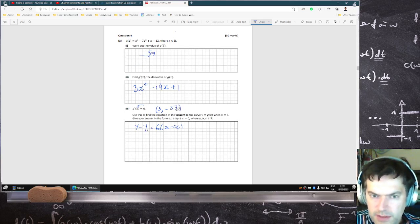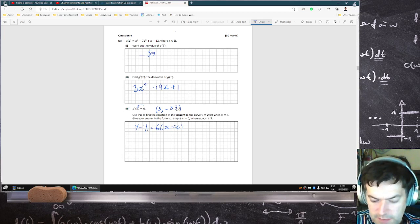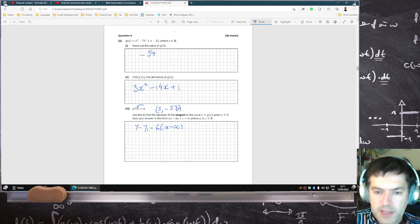and we know the y1 is minus 57. That's quite a negative number. I'm going to double-check that. 5 cubed minus 7 times 5 squared plus 5 minus 12. Yep, minus 57.